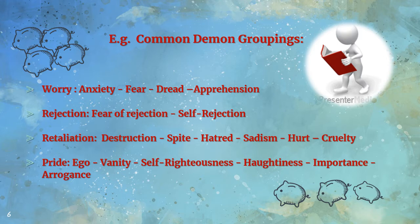Here are some common demon groupings: Worry tends to come with anxiety, fear, dread, and apprehension. Rejection commonly appears with fear of rejection and self-rejection. Retaliation clusters with destruction, spite, hatred, sadism, hurt, and cruelty. With pride tends to come ego, vanity, self-righteousness, haughtiness, self-importance, and arrogance. These gangs travel together.